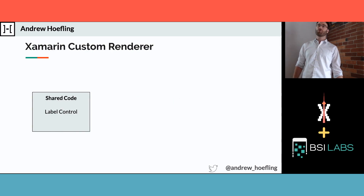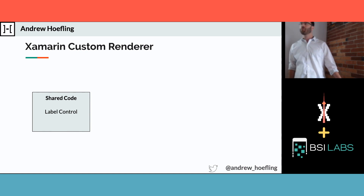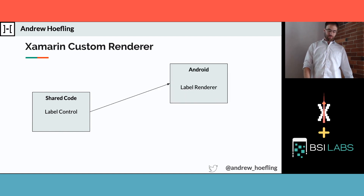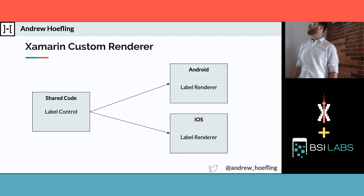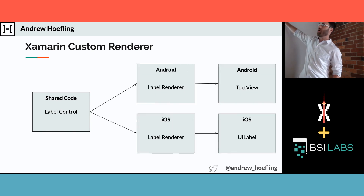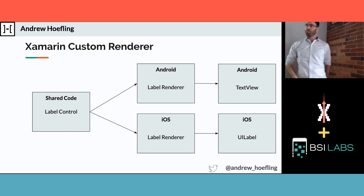Let's look at a traditional custom renderer. Take the Xamarin label control: in shared code there's a label control with text, color, background color. There's a label renderer in the Android codebase and one in the iOS codebase. On Android it uses a TextView, on iOS it uses a UILabel. But in our shared code, all we do is write our label, and when the Android code runs it knows to go use the TextView and render it on screen.